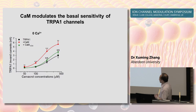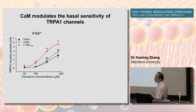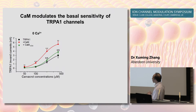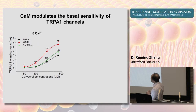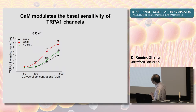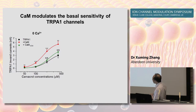To investigate the role of calmodulin in the modulation of TRPA1 by calcium, we plotted TRPA1 inward currents evoked at nominally zero calcium as a function of agonist concentration. Over-expression of calmodulin markedly enhanced the basal sensitivity of the TRPA1 channel, seen as a marked leftward shift of the dose-response curve. However, this enhanced basal sensitivity was abolished by mutating all four calcium-binding sites of calmodulin.